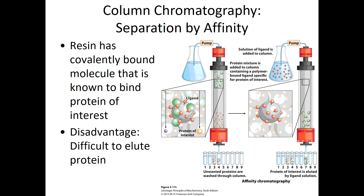Affinity chromatography is very helpful if your protein is known to bind a specific ligand. You create a resin inside the column that has that ligand attached, so as you pour your sample through, nothing sticks except the protein that specifically bonds to that ligand — allowing very high purity. The disadvantage is that if your protein binds really well to the ligand, it can be hard to get it to let go.